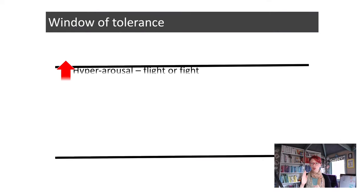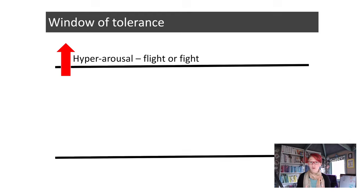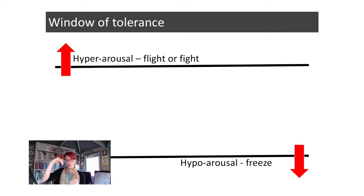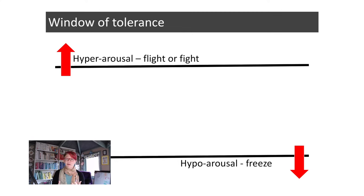Our aim each day, where possible — and it's not always possible — is to try and stay within our window of tolerance. So we're going up and down, but we're trying to stay in the optimal zone. We're trying not to shoot up through the top, which is what we call hyper-arousal — that's our fight or flight type response. And we also want not to shoot down through the bottom, which is hypo-arousal — that's our freeze response, our more depressive, low mood, lacking-motivation type response.